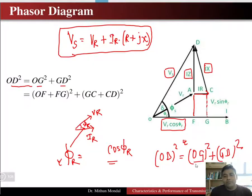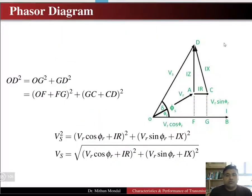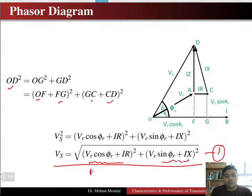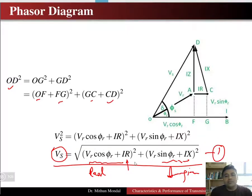OG can be broken into OF plus FG, and GD into GC plus CD. Substituting the values of OF, FG, GC, CD, and OD, we get the sending end voltage as: VS = √[(VR·cos(phi_R) + IR)² + (VR·sin(phi_R) + IX)²]. The first term is the real part squared and the second is the imaginary part squared.